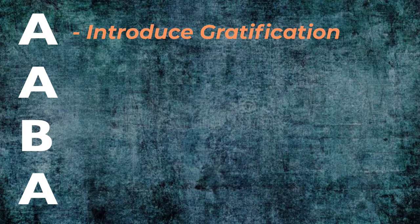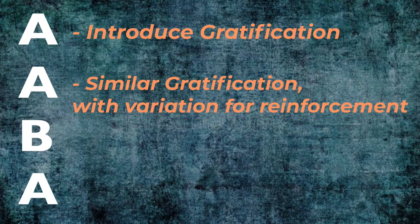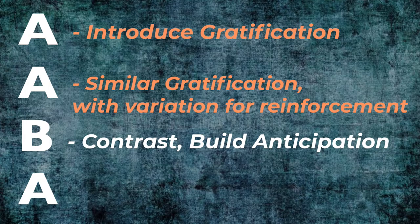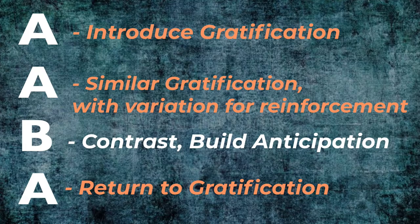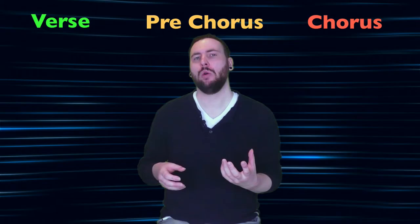You can think of the AABA form like this: the first A introduces a section of gratification, the second A has a similar amount of gratification but is at risk of becoming static, so we add variation to build to the B section — our main area of contrast — building tension and anticipation for the return to gratification in the last A section. Because the song's main hook lives in the A section, the song form itself is 75% chorus, much more chorus-heavy than the now traditional pop form, where the average chorus accounts for around 39% of the song.